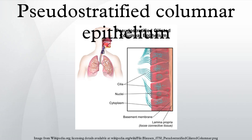Stereocilia of the epididymis are not true cilia because their cytoskeleton is composed of actin filaments, not microtubules. They are structurally and molecularly more similar to microvilli than to true cilia. Pseudostratified columnar epithelia are also found forming the straight tubular glands of the endometrium in females.